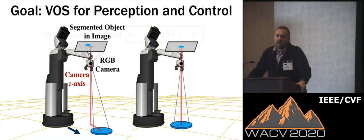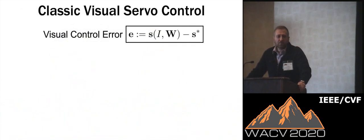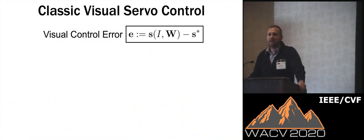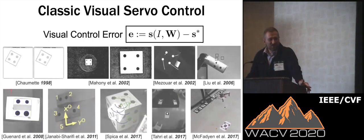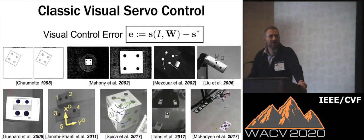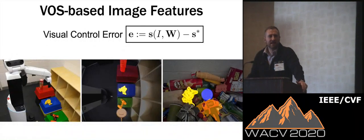We looked at classical visual servo control. Like any feedback controller, the first part is an error, based on the difference between an image feature and its desired position. In classical visual servo control literature, fiducial marker-based image features are common. The nice thing about this work is that by using segmentation, robots can visual servo using ordinary real-world objects.